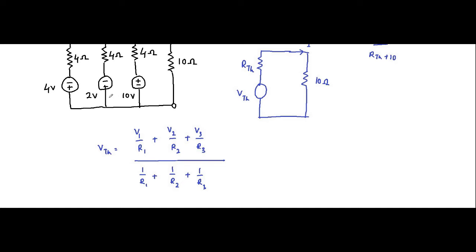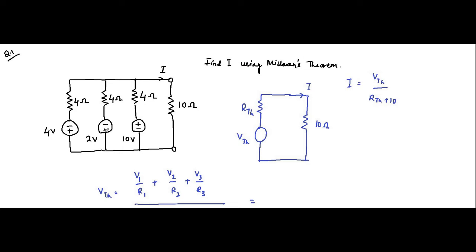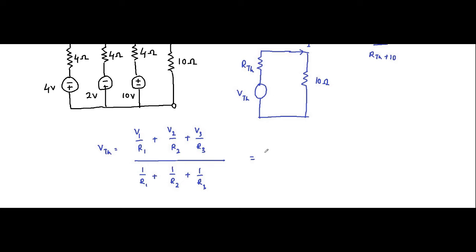There are three voltage sources here: 4V, minus 4V, minus 2V, and 10V. There are three resistances, all equal. Always pay attention to the polarity of the voltage sources — it is very easy to make mistakes. Minus-plus means it is negative; plus-minus means it is positive. I have already made videos on sign conventions associated with voltage sources, current sources, and voltage drops across resistors, inductors, and capacitors.